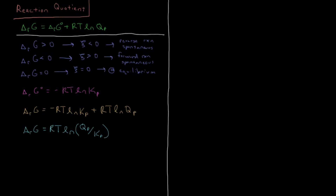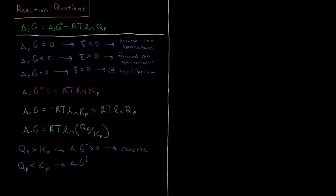This gives us the criteria for spontaneity in terms of the reaction quotient relative to the equilibrium constant. If QP is greater than KP, the Gibbs energy of reaction will be greater than zero, and the reverse reaction will be spontaneous. If the reaction quotient is less than the equilibrium constant, the system wants to shift forward to reach equilibrium — delta G of reaction will be less than zero, and the forward reaction will be spontaneous. When the reaction quotient equals the equilibrium constant — which is actually the definition of the equilibrium constant — delta G of reaction will equal zero, and the system is at equilibrium.